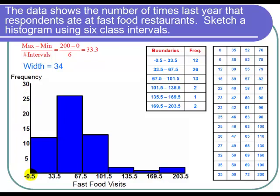And here's my intervals from negative 0.5 to 33.5 and I have a rectangle of height 12. From 33.5 to 67.5 I have a rectangle of height 26. Then I draw the next rectangle of height 13, then 2, then 1, and then 2 again. So here's my histogram.